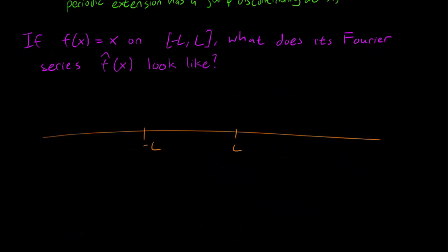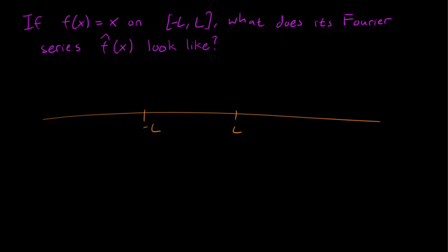As a simple example, let's try to answer this question. If f(x) equals x on minus L to L, what does its Fourier series look like? So we start out with the function, graphing the function. So minus L to L, and it's a straight line, obviously.